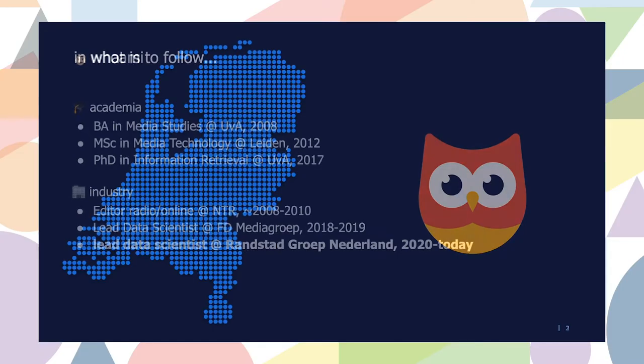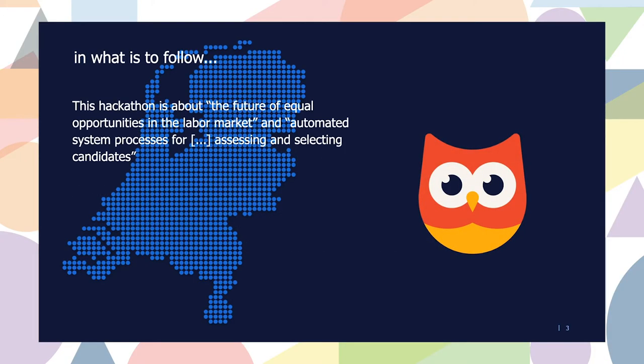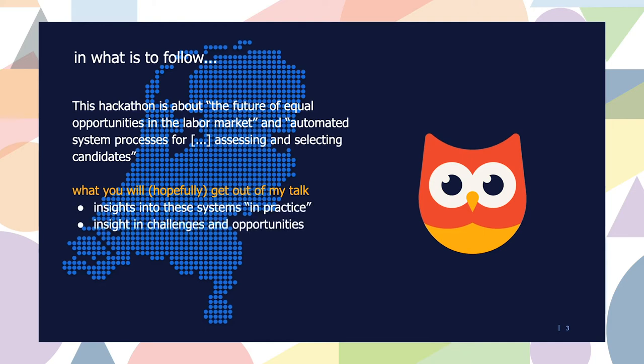In this talk I would like to share a few things in the context of the hackathon. The hackathon today is about the future of equal opportunities in the labor market, and more specifically about automated system processes for assessing and selecting candidates. Ideally, at the end of this talk you'll get some insights into how these systems work in practice, the challenges and opportunities of deploying them, and some inspiration for your own project. And if all else fails, at least you get a lot of reading material, as I'll share all my sources at the end.